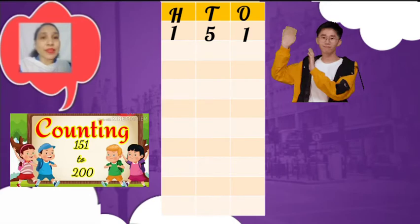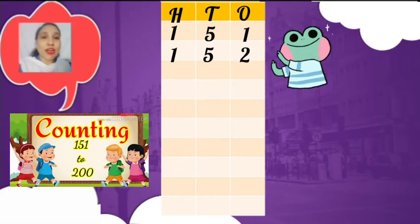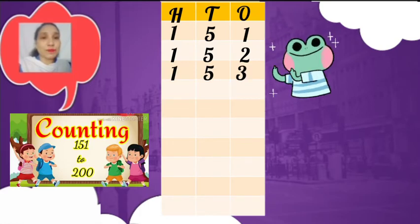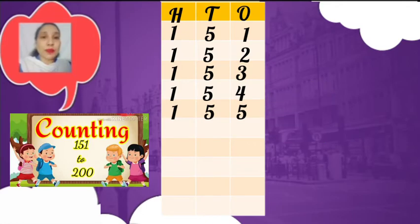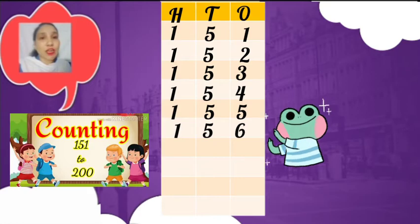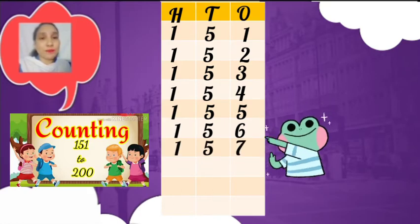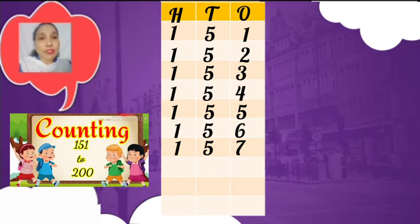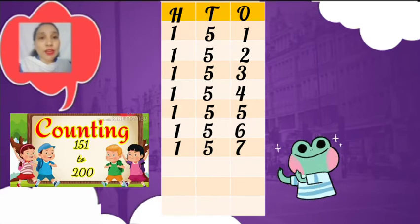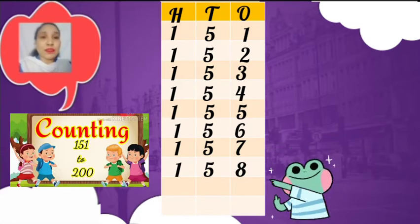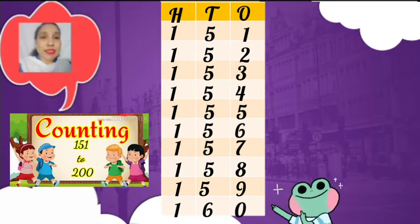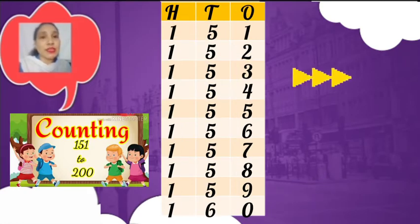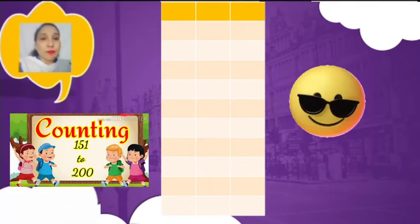What comes after 151? That is 152. After 152 comes 153. The next number will be 154, then 155, then 156. After 156 comes 157, then 158, then 159, and the next number will be 160.